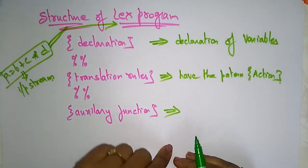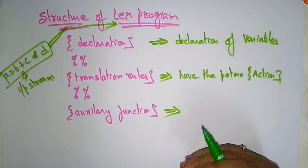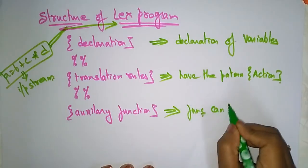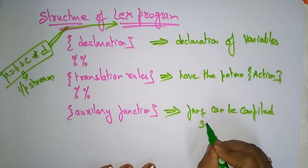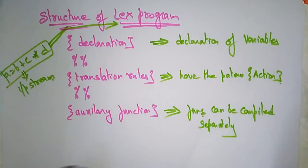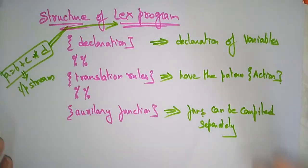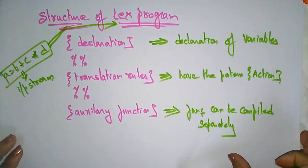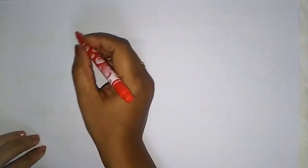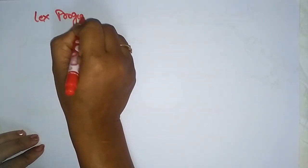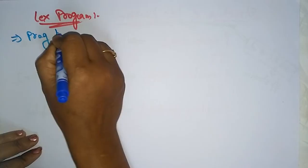The auxiliary functions are extra functions that can be compiled separately and loaded with the lexical analyzer — that is why this section is optional. This is the structure of the LEX program. With the help of the input stream represented as a LEX program, the lexical analyzer can automatically convert it into a sequence of tokens. Let's see a small LEX program example: write a program to count the number of vowels and consonants in a given grammar. This will be explained in the next video.